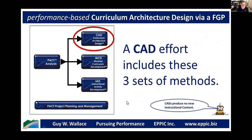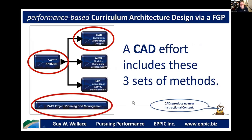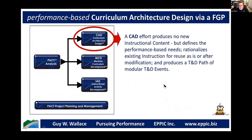Curriculum architecture design includes three of five methodology sets. There's a design methodology unique to curriculum architecture, fed by a common analysis methodology that feeds all three levels of my instructional design methodologies. There's also a project planning and management methodology set. A curriculum architecture design doesn't produce any new content — it simply defines what the performance requirements are, what you need to know to perform, what existing content can be reused as-is or after modification, and therefore what the gaps are. Then we take the gaps to the client to prioritize.